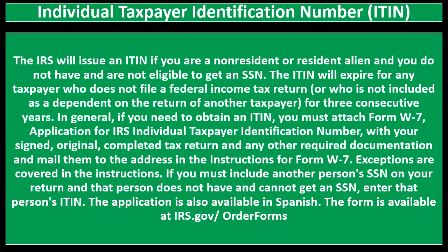The Individual Taxpayer Identification Number, or ITIN, is issued by the IRS if you are a non-resident or resident alien and you do not have and are not eligible to get an SSN. The ITIN will expire for any taxpayer who does not file a federal income tax return, or who is not included as a dependent on another taxpayer's return, for three consecutive years. To obtain an ITIN, you must attach Form W-7, Application for IRS Individual Taxpayer Identification Number, with your signed original completed tax return and any other required documentation, and mail them to the address in the instructions for Form W-7. If you must include another person's SSN on your return and that person cannot get an SSN, enter that person's ITIN.